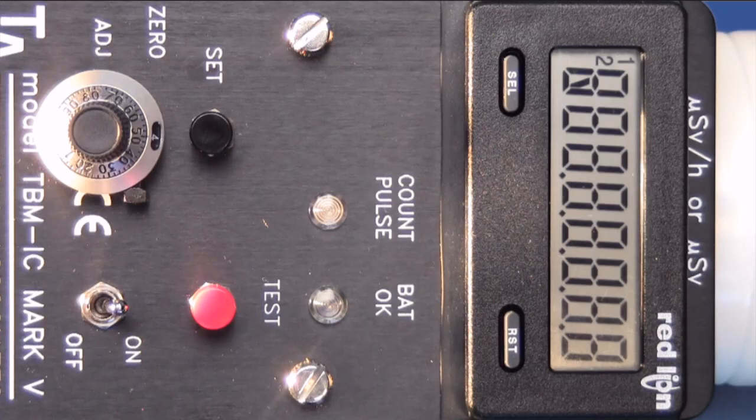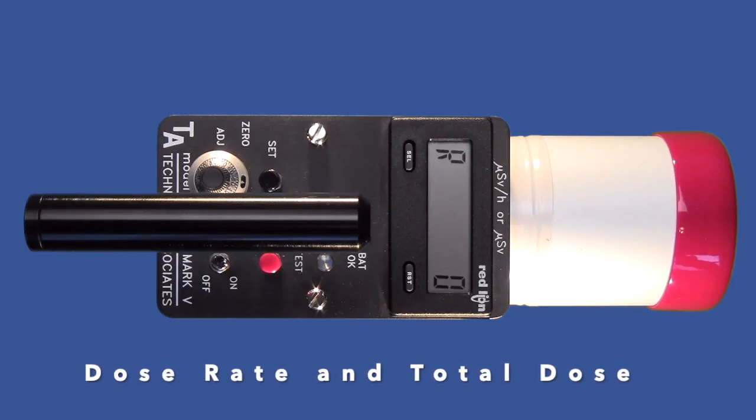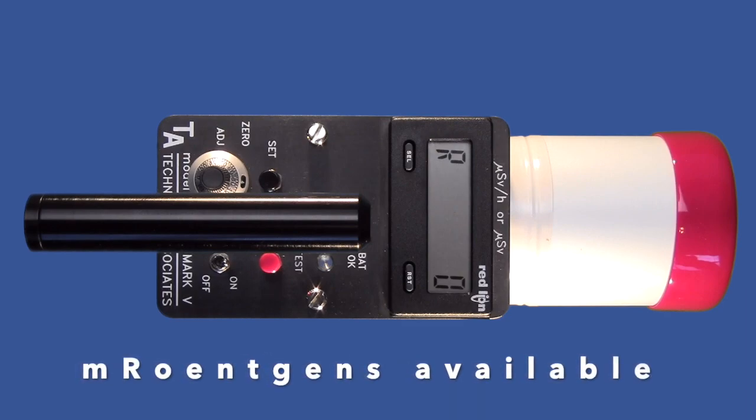The ion chamber survey meter features an 8-digit digital display yielding dose rate and total dose in micro-sieverts per hour and micro-sieverts respectively. Miller-Rentgens are available for US domestic use.